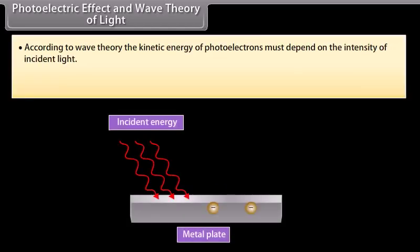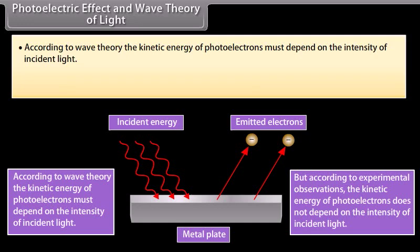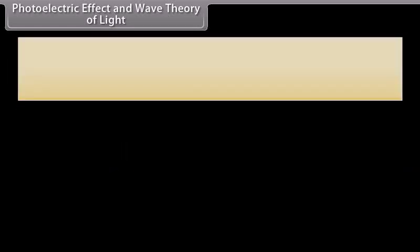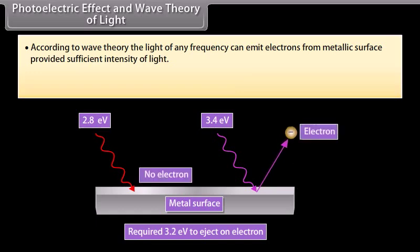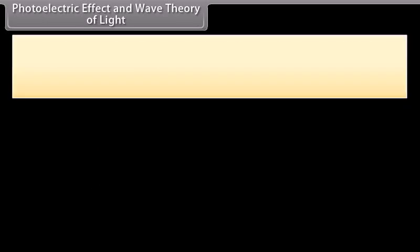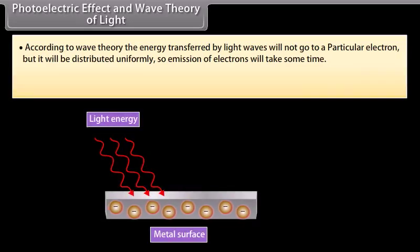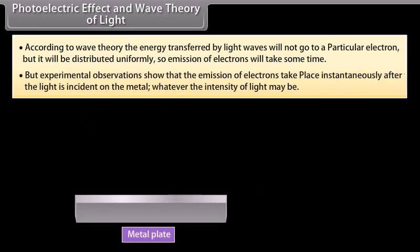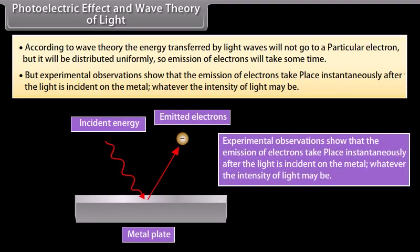According to wave theory, the kinetic energy of photoelectrons must depend on the intensity of incident light - but experimentally, the kinetic energy of photoelectrons does not depend on intensity. Wave theory also states that light of any frequency can emit electrons provided sufficient intensity, but experimentally light of frequency less than the threshold frequency cannot emit electrons whatever the intensity. Furthermore, wave theory predicts that energy transferred by light waves will be distributed uniformly and emission will take some time, but experiments show that emission of electrons takes place instantaneously after light is incident on the metal.